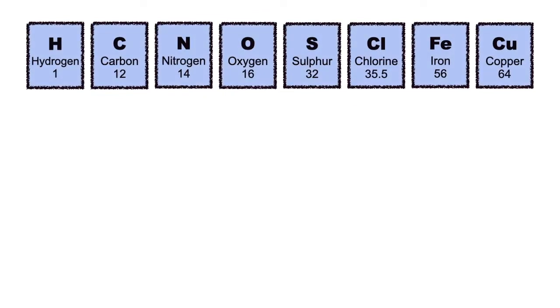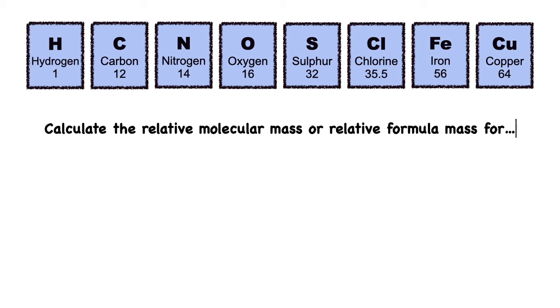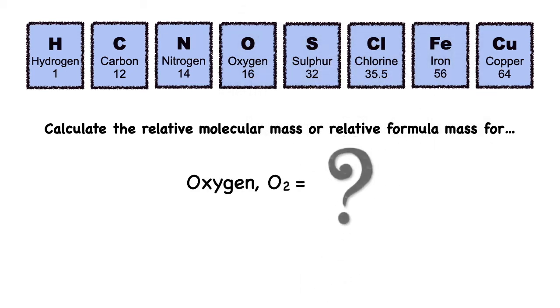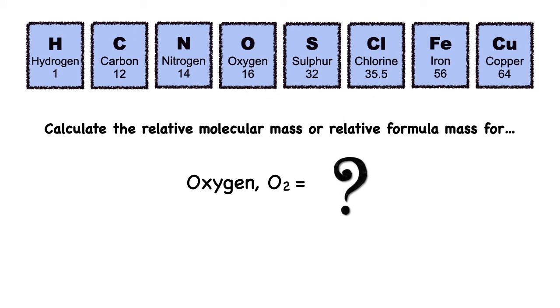Now let's do some exercises. Ready with your calculator! Here are some elements with their relative atomic mass. Calculate the relative molecular mass or relative formula mass. For hydrogen, H2: the relative atomic mass for hydrogen is 1, so the answer is 2 times 1 equal to 2. Next is oxygen, O2: the relative atomic mass of oxygen is 16, so 2 times 16 equals 32.